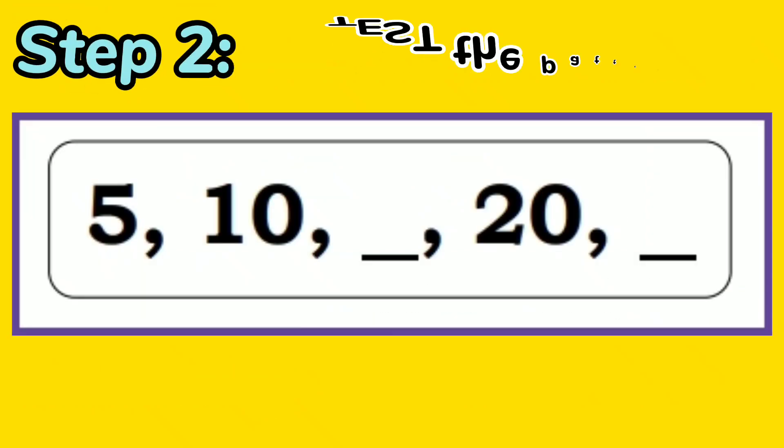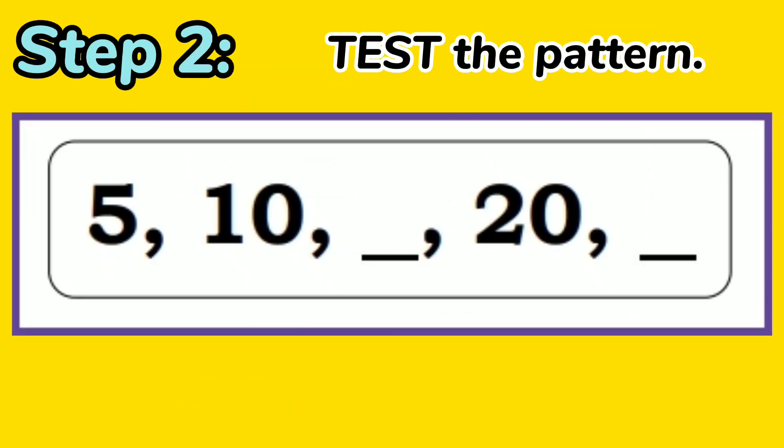For Step 2, test the pattern. Make sure to check the pattern if it is correct to the whole sequence from 5 to 25. If we add 5 to 10, we will find 15 as the first missing term. By following the same procedure with 20 added by 5 — 20 plus 5 — we will find the last missing term as 25.